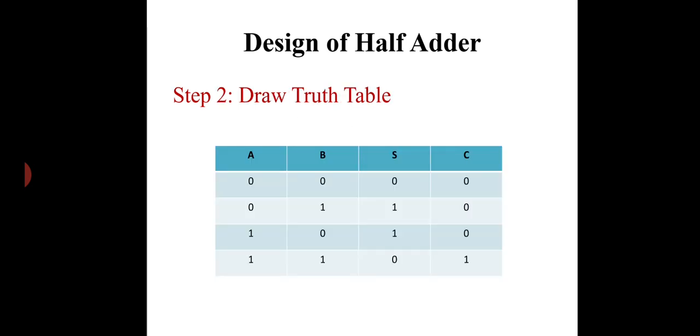Moving to step 2, draw the truth table. For drawing the truth table, as we have two inputs, there will be 2 raised to N combinations where N is the number of input variables. Therefore, in our case, as we have two inputs, there will be 2 raised to 2, that is 4 combinations as shown in the truth table. And we have two outputs as S and C.